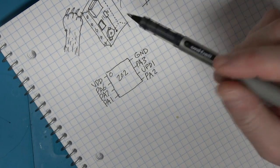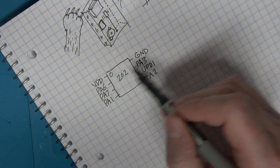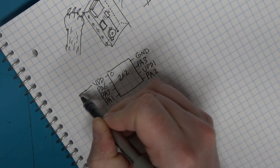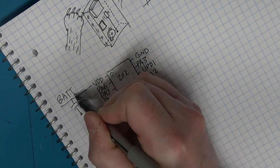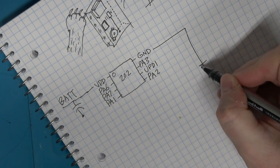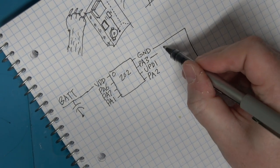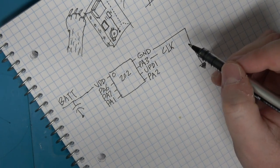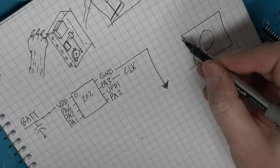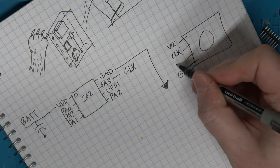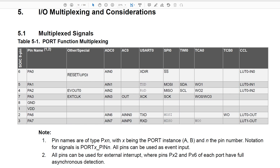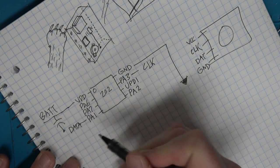Here's our ATtiny202 chip. It's got eight pins. Obviously we've got voltage and ground, so we'll probably have voltage coming in here. Have a capacitor to ground there. Just probably run it right off the battery. It should be fine. Ground goes to ground.